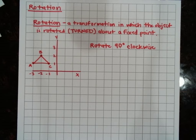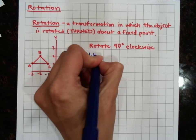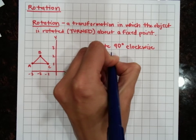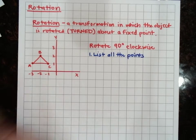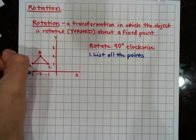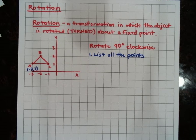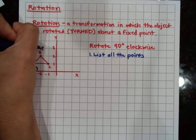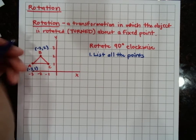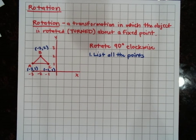Step one is to list all the points. Point A: x is negative three, y is one. Point B: the point is negative two, positive two. And point C is negative one, positive one.